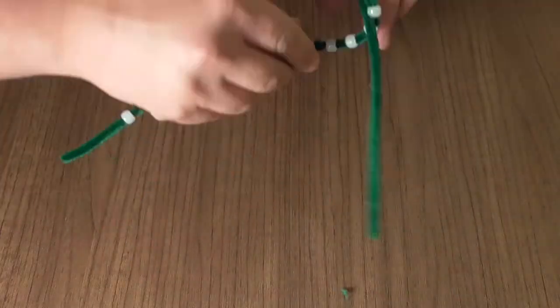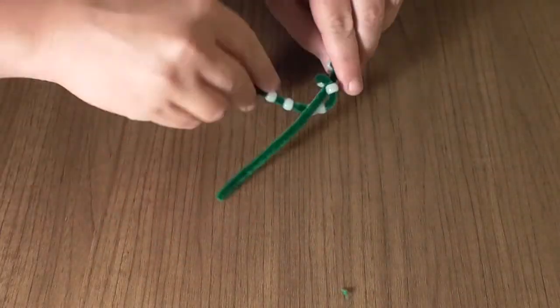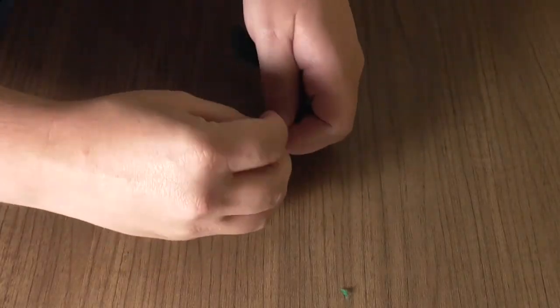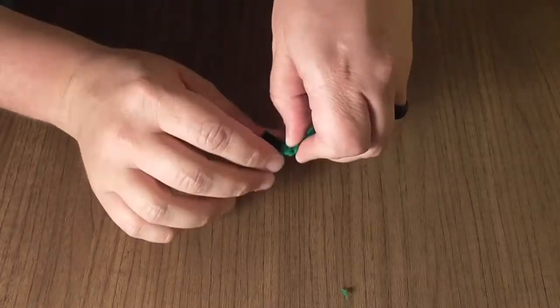Wrap the beaded pipe cleaner around the body of the chameleon. This will build up its torso. Connect the end of that pipe cleaner to the base of the chameleon's tail.